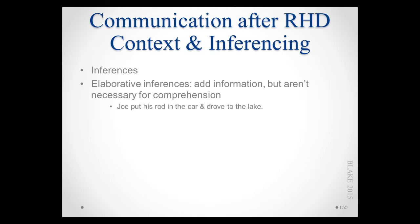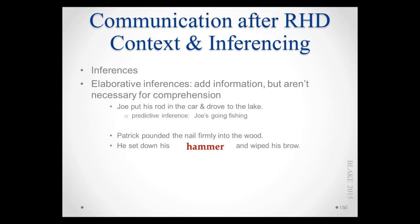Here's another example of an elaborative inference called a predictive inference. If you hear the sentence 'Joe put his rod in the car and drove to the lake,' most people will infer that Joe is going fishing — they're predicting that outcome. Here's a tool inference example: 'Patrick pounded the nail firmly into the wood. He set down his hammer and wiped his brow.' When people get to the word hammer, they read it very quickly because they expect and infer he is using a hammer since he pounded a nail.